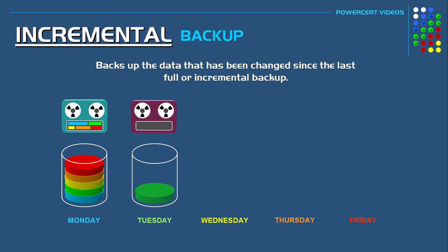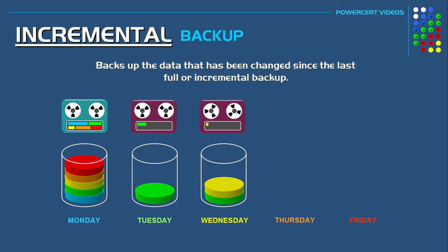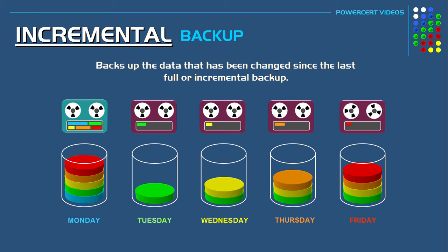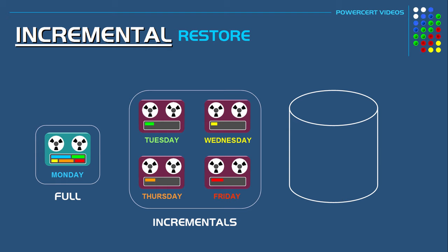So Tuesday will only back up Tuesday's data, Wednesday will only back up Wednesday's data, Thursday will only back up Thursday's data, and so on. As you can see in this illustration, each backup tape only backs up the data that has been changed for that weekday. The advantage of an incremental backup is that it's the fastest backup compared to a full or a differential backup.